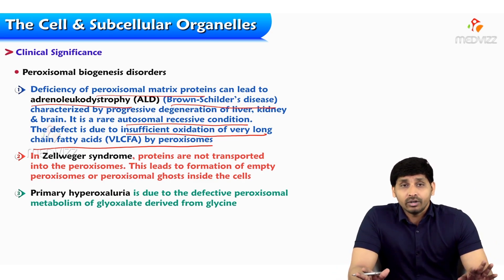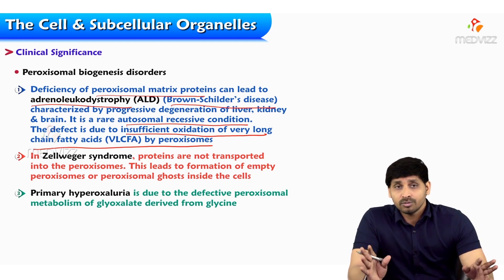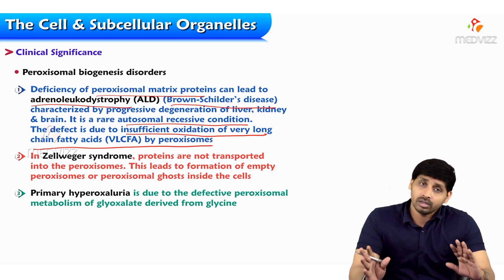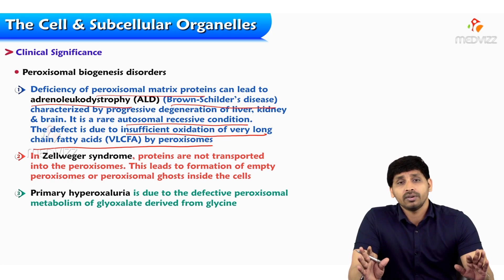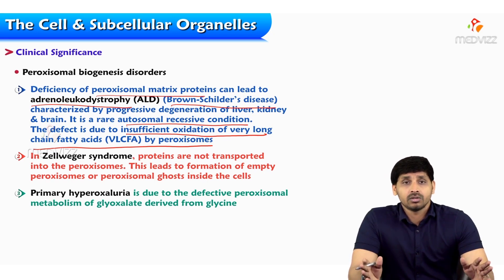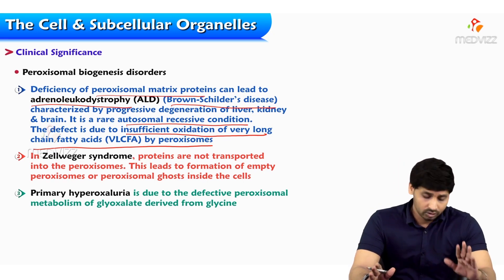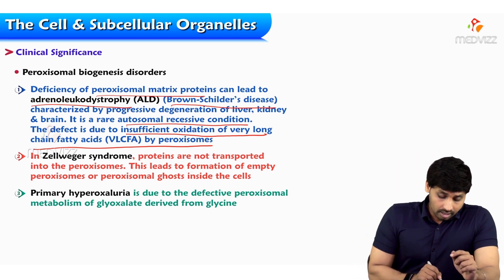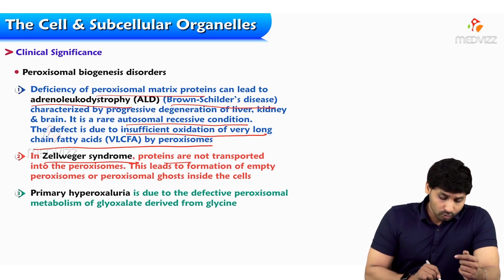When long chain fatty acids cannot be degraded, they accumulate inside the peroxisome, causing disturbance to cell functioning. Since peroxisomes are mainly present in liver cells, the other functions of the liver beyond detoxification are also affected. The accumulation of long chain fatty acids is the cause of adrenal leukodystrophy.